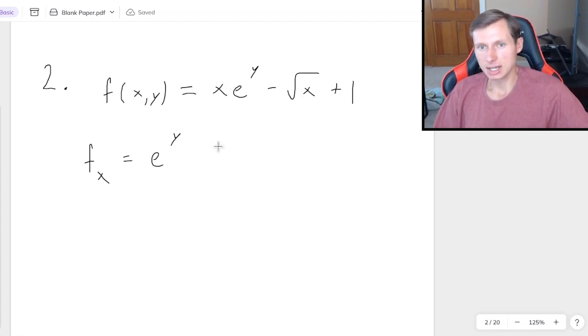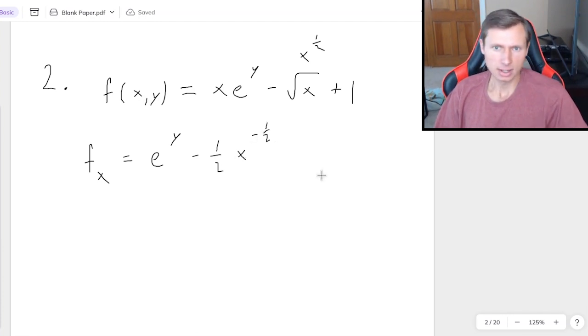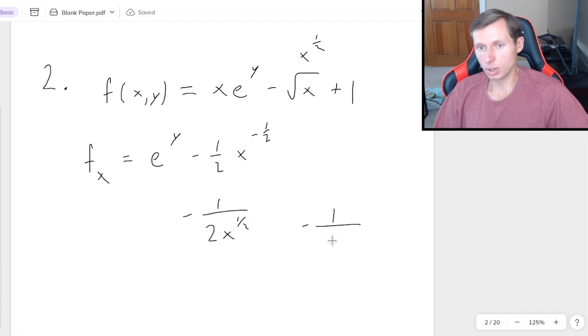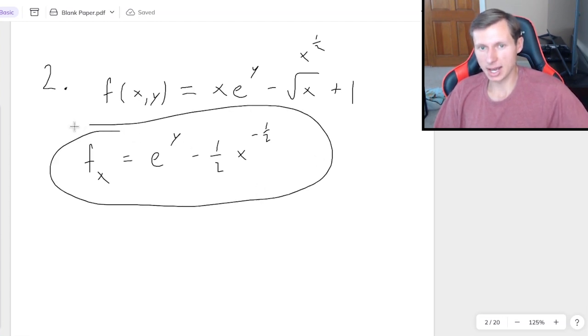It's just going to be e to the y as my derivative, because it's just like x to the first. So you just write the coefficient. Then for the square root of x, remember that's really x to the 1 half, just like from calc 1. So that's just going to be minus 1 half x to the negative 1 half power. There's a couple different ways you can write that. However you write it, I'm fine with it. Like for instance, if you want to write instead, negative 1 over 2 x to the 1 half, or negative 1 over 2 root x, that's the exact same thing, so I don't care how you write it.